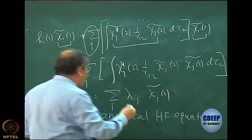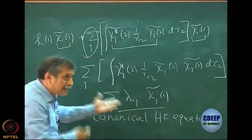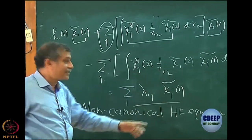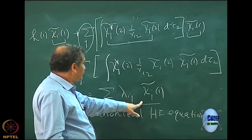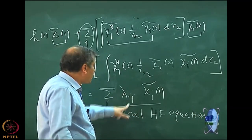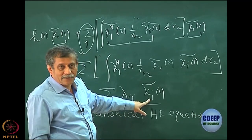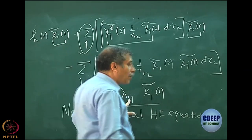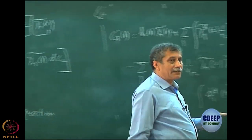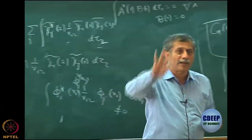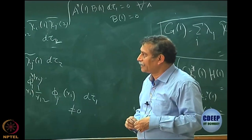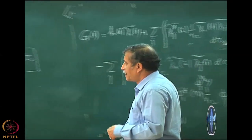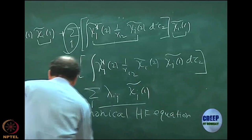I have a further problem: this is not yet in eigenvalue equation structure because it is not a number times chi i tilde 1. If it was diagonal, it would have been a number times chi i tilde 1. If this was diagonal, j is equal to i, so it would have become a number times chi i tilde 1. But let us not worry about that right now — we will see how to do that. That would actually be the canonical Hartree-Fock. When lambda becomes diagonal, we will actually get the canonical Hartree-Fock.